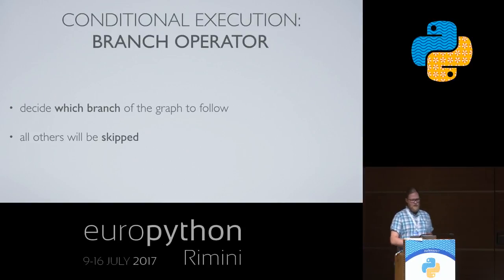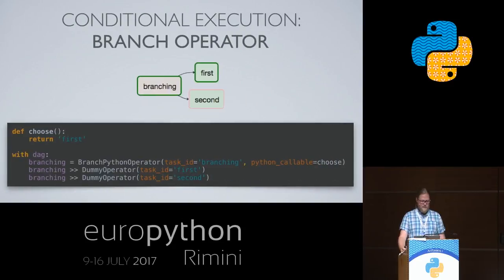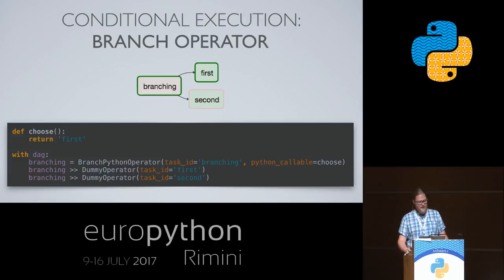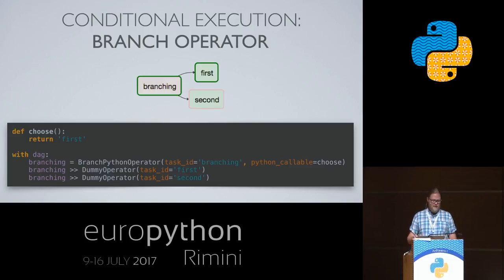There are some more interesting things you can do. For example, if you want to follow a certain branch of the graph and skip others, you can use the branch operator or the branch Python operator. You have a graph with one upstream task and two downstream tasks — the branching task decides which task to follow simply by returning the ID of the downstream task that needs to be executed. All others will be skipped.